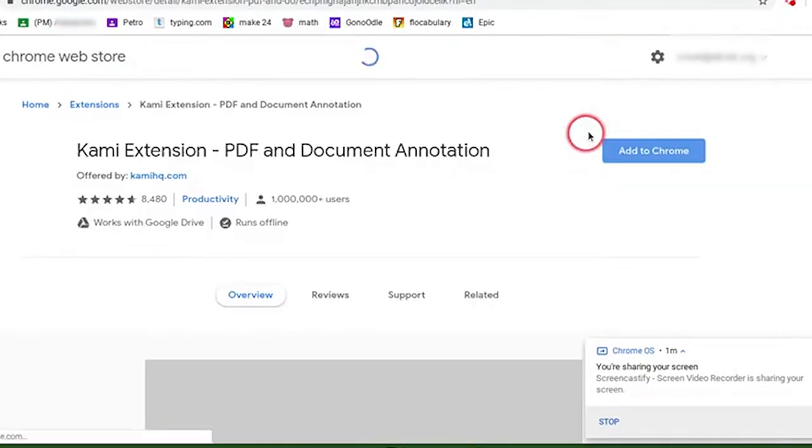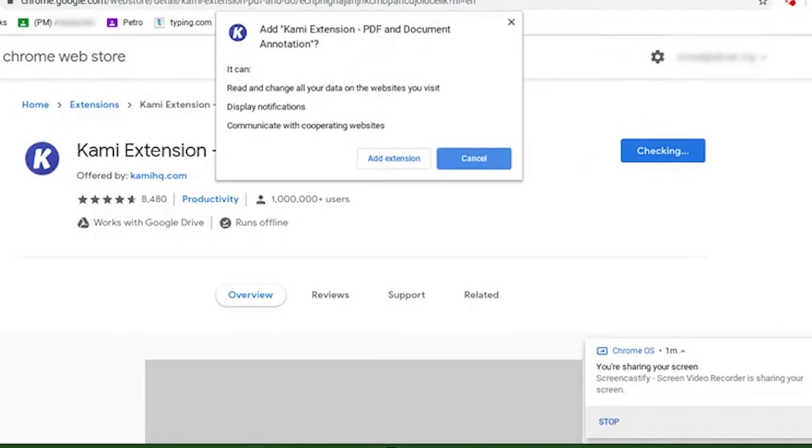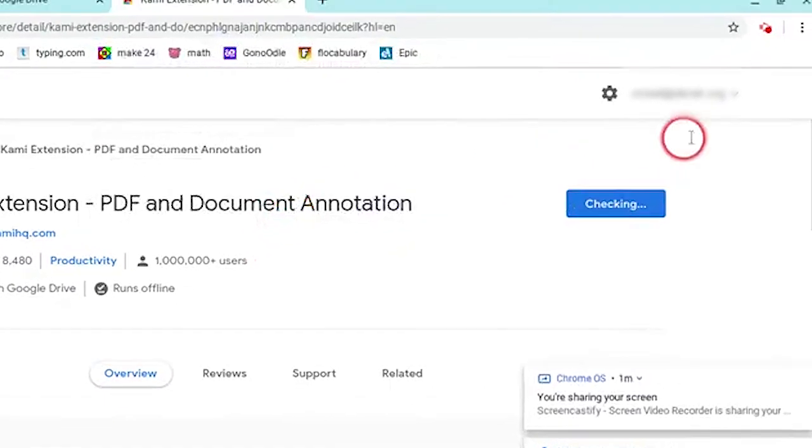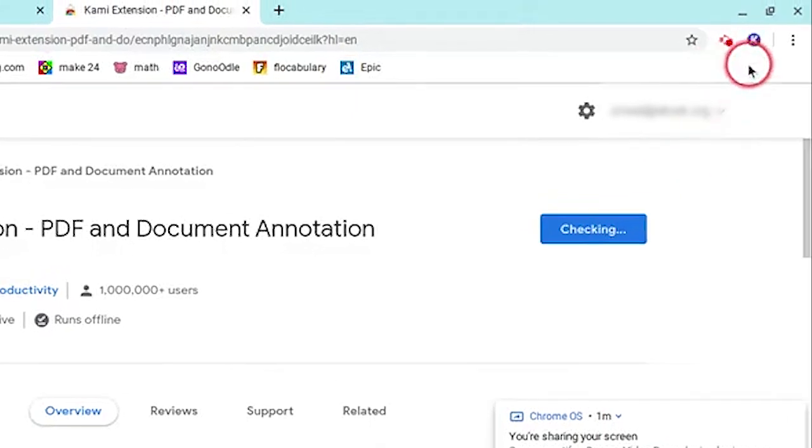Once it finished loading, you're going to hit Add to Chrome on the right, and then you're going to hit Add Extension. Then you're going to see a K in the top right-hand corner.